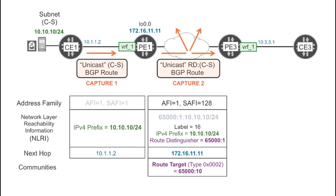Finally, an extended community called Route Target is added to influence how the route will be imported in remote PEs like PE3 — more precisely, in which VRFs it will be installed, according to the import policies in the remote PEs. In this scenario, you are using a full mesh topology, so all the unicast routes in VRF1 carry the same route target, regardless of which PE is advertising them.